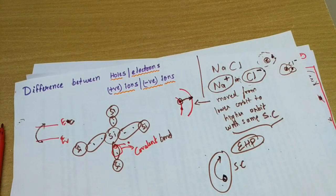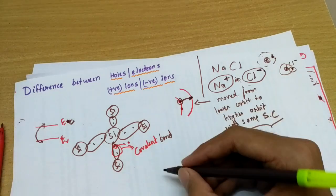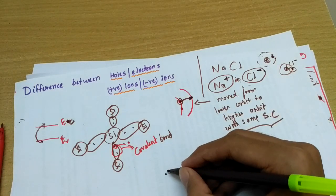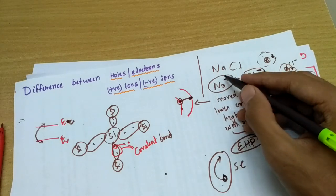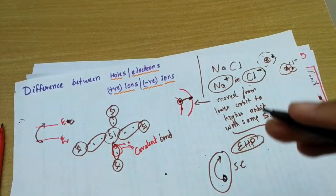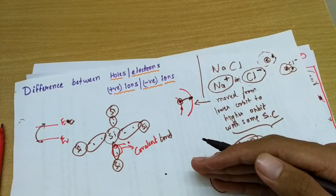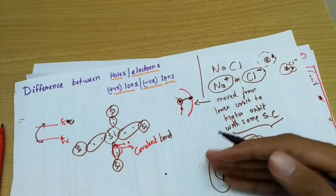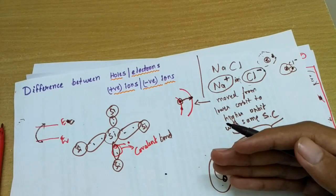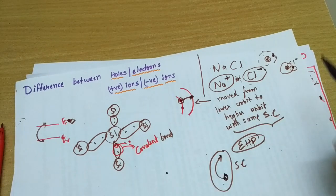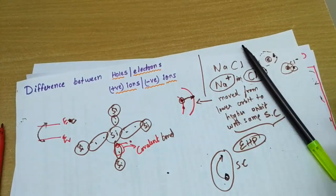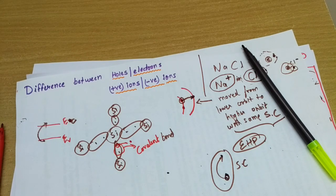This is the key difference between electron-hole pair generation and positive and negative ions. The bottom line is: if an electron leaves its own atom, then the atom becomes charged. But if it is jumping within the same semiconductor — within its own home — then we cannot call it an ion. It is just an electron-hole pair generation. This is a small but important misconception that I hope I've now cleared up.